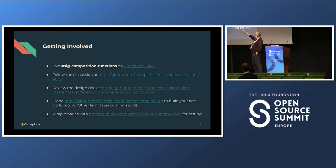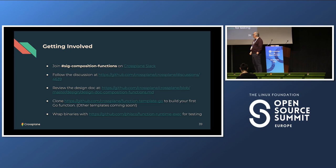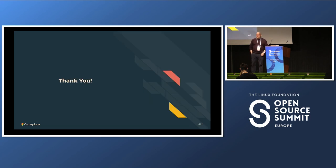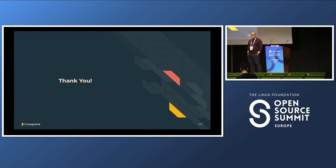If you want to get involved, the Crossplane Slack has a SIG composition channel where all the core developers are. There's a design doc discussion in the Crossplane repo — Crossplane has very good design docs across the project. You can also clone the function template repository. There's also a cool thing where you can wrap any binary to make it look like gRPC, just for local testing — basically take any script and have a wrapper handle all the gRPC stuff. We'll probably have something more advanced available closer to release. Thank you — I've been working on Crossplane for about three or four years, and I'm very excited about this.